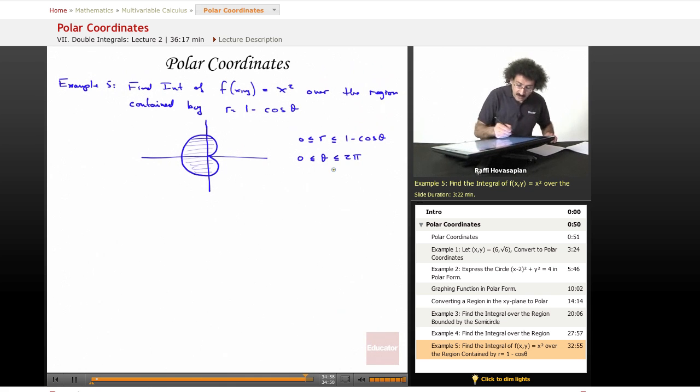So now let's go ahead and do f of r,θ. Well, x² is r² cos²(θ).